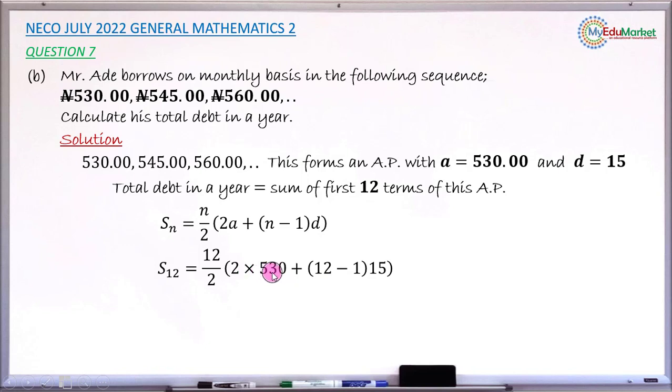2 times 530 and 12 minus 1 times 15 is what gives answer 1060. 1060 is now 2 times 530, and 12 minus 1 gives answer 11.